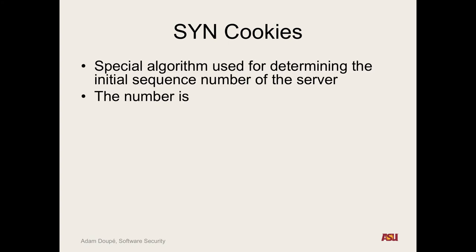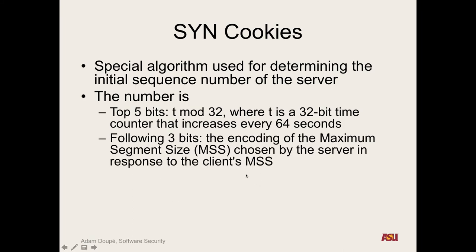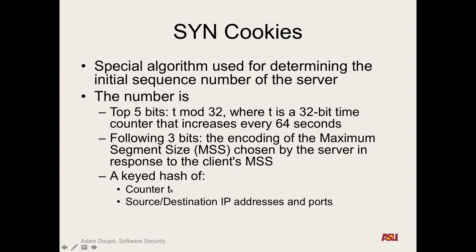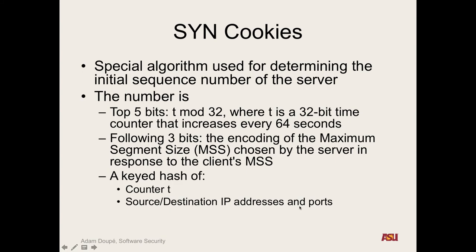The idea of a SYN cookie is: instead of allocating memory on the server about what the sequence number was, I can actually encode that information in the sequence number I send to you. When I get it back, I can verify that it actually came from me at an earlier time and it's a valid sequence number. The idea is we have a counter that increases, and we're going to use a hash of that counter plus the source IP, source port, destination IP, and destination port — the four-tuple — in the sequence number. That way when we receive an ACK to start a new connection, we've stored no state about this SYN/SYN-ACK. But I can use the sequence number, the source IP, source port, destination IP, destination port, plus the counter T, which the attacker can't guess, to hash and verify this actually came from me at an earlier time without storing any state.